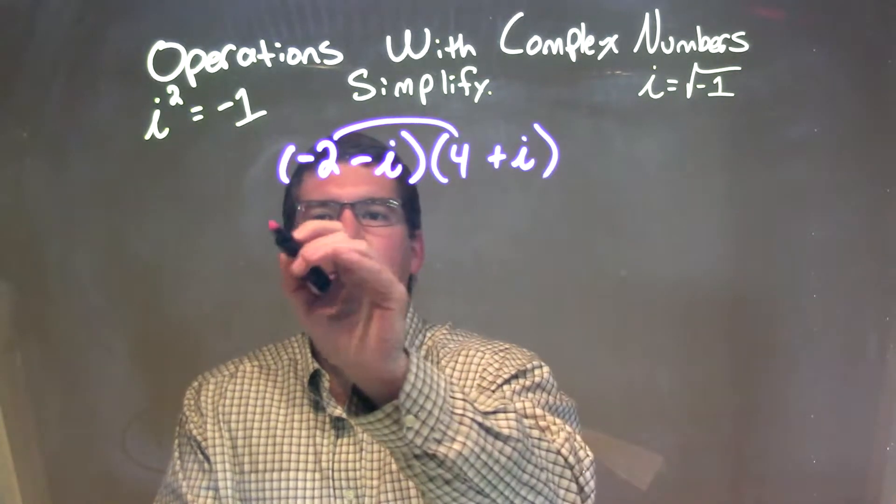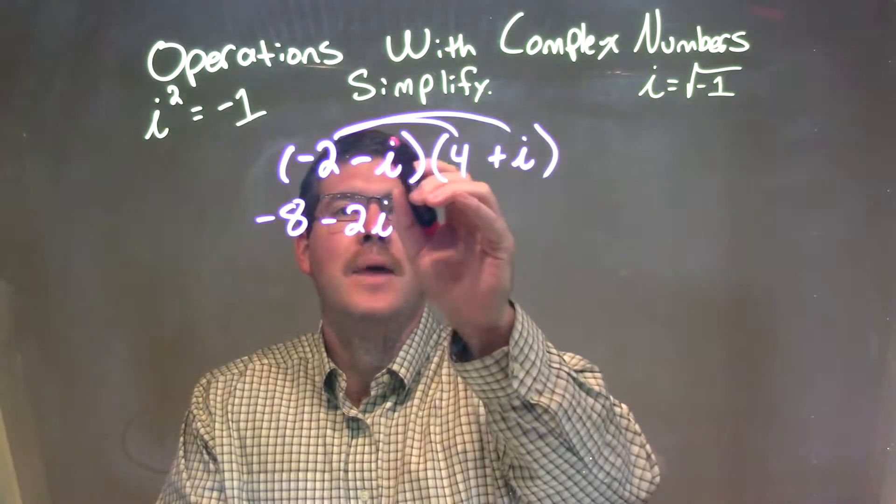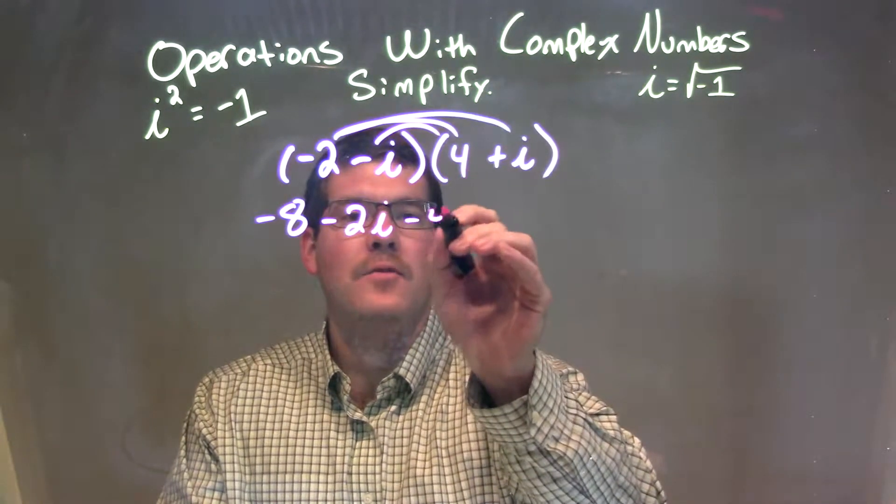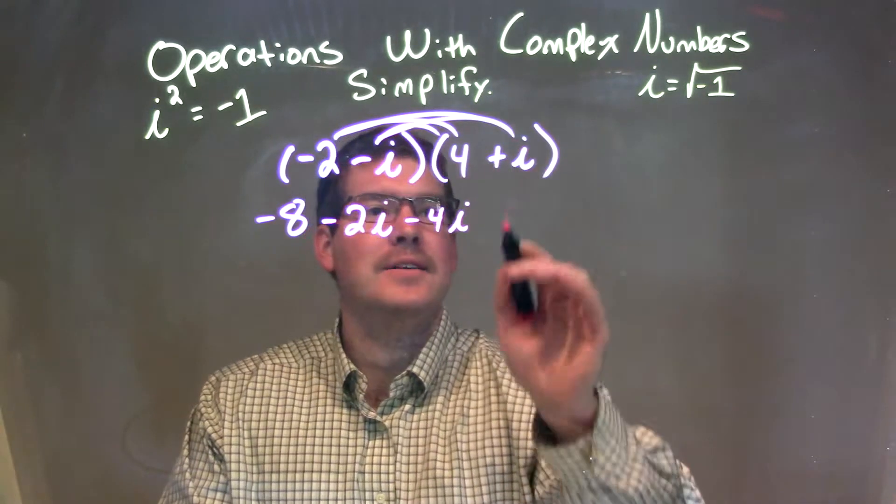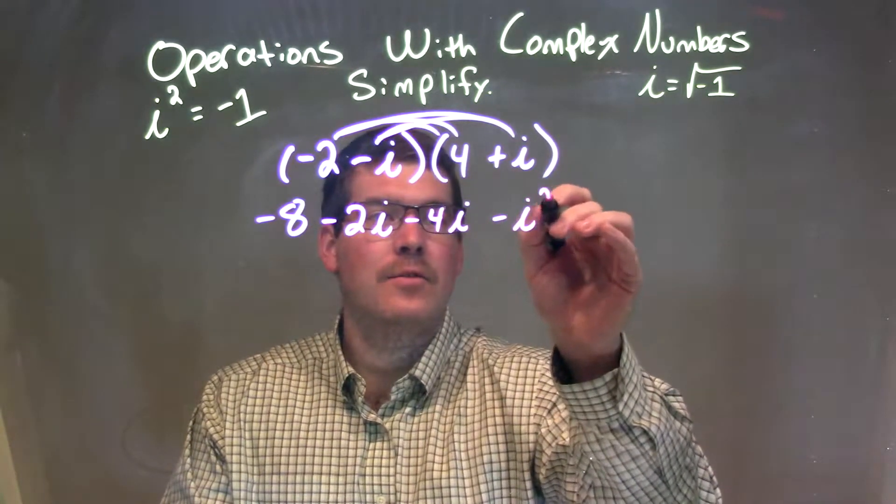Minus 2 times 4 is minus 8. Minus 2 times i is minus 2i. Minus i times 4 is minus 4i, and minus i times i is minus i squared. Okay?